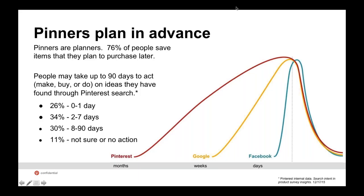Now I'll walk you through the Pinterest tag. On Pinterest, many users are there for inspiration and to plan in advance — this is different from platforms like Google or Facebook. On Google, someone expressing search intent is more likely to convert immediately. On Pinterest, someone might see a pair of shoes they want to buy in a few months, save it now, and make a purchase much later. It's important to give yourself a long conversion window — we see about 30% of people convert 8 to 90 days after engaging with a promoted pin.